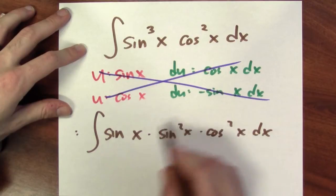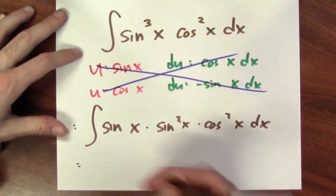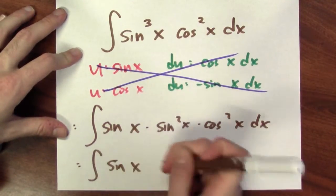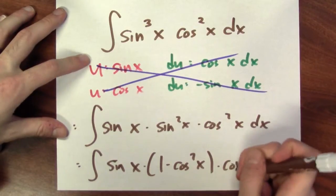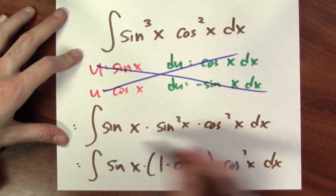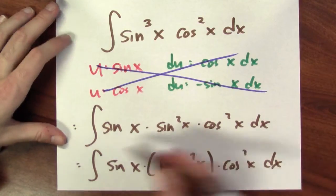And then I'm going to use the fact that sine squared is 1 minus cosine squared x. All right, so I can rewrite the integral as this.